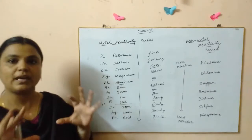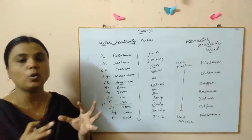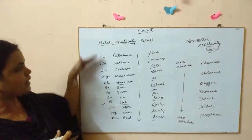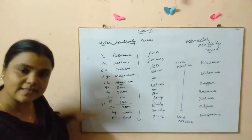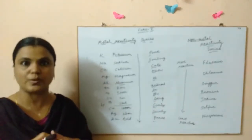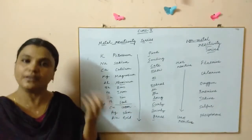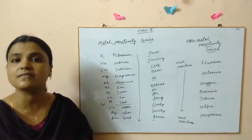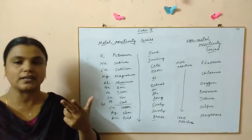Basically metals can be classified into metals more reactive than hydrogen and metals lesser reactive than hydrogen. Usually it is classified in such way children.